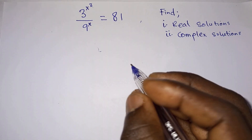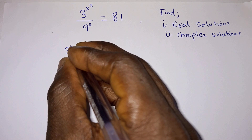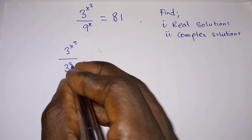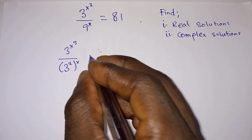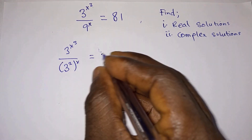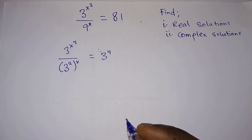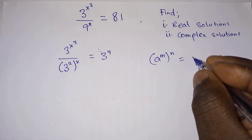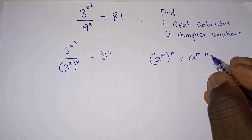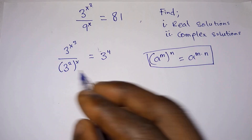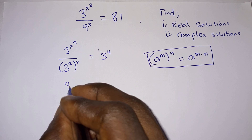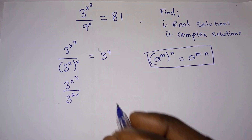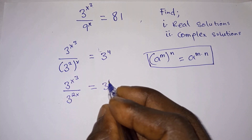Let's start. We are given 3 to the power x to the power 3, divided by — we write 9 as 3 to the power 2 — then to the power x, is equal to 81, which is the same as 3 to the power 4. We apply the power rule: a to the power m to the power n equals a to the power m times n. So we have 3 to the power x³ divided by 3 to the power 2x, equal to 3 to the power 4.